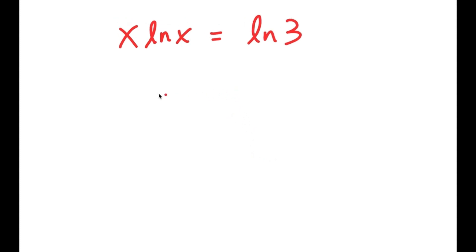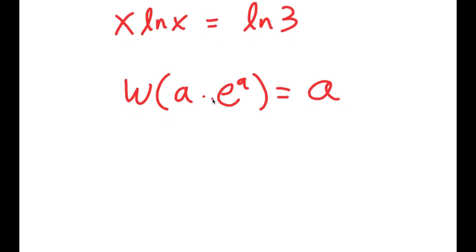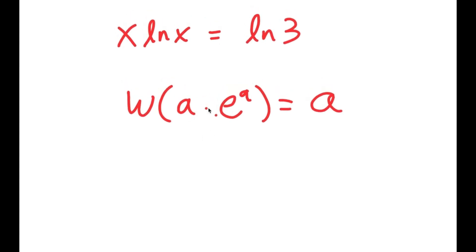Now, I'm going to use an important formula called the W-Lambert formula. It states that if I take the W of something in the form a times e to the power of a, then this is equal to a. So this is the W-Lambert formula. In this case, I'm going to rewrite this so that it suits the W-Lambert formula — we need to change this to be in the form a times e to the power of a.